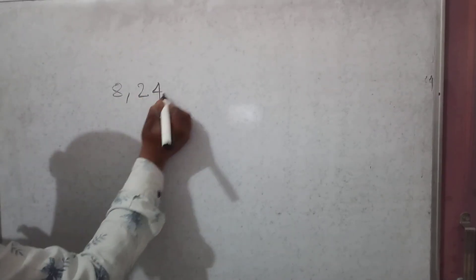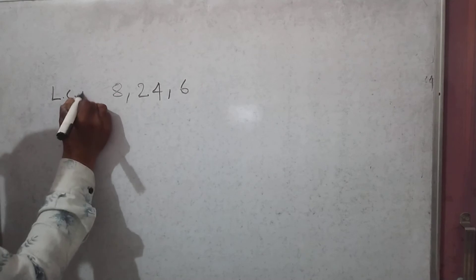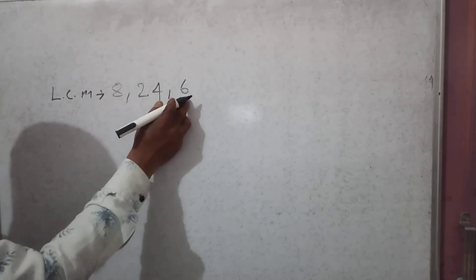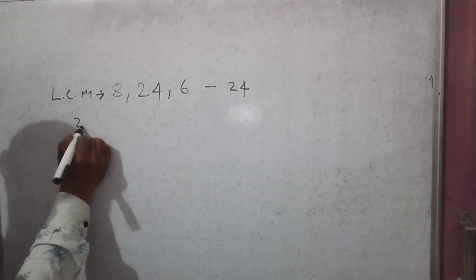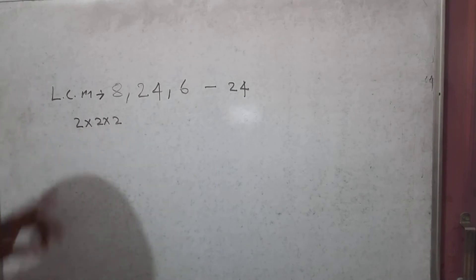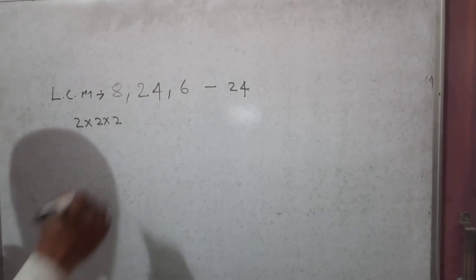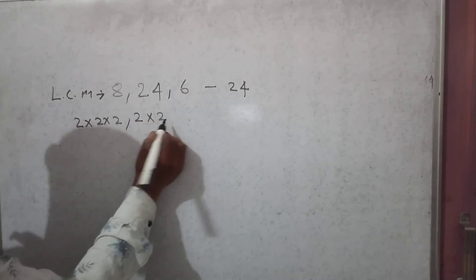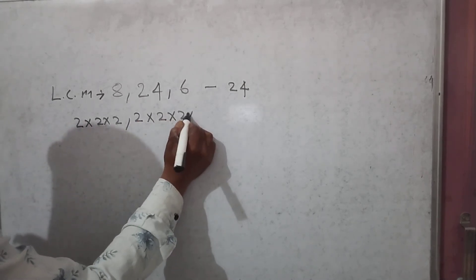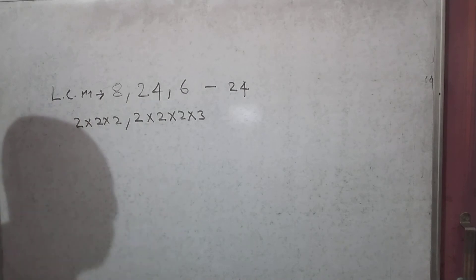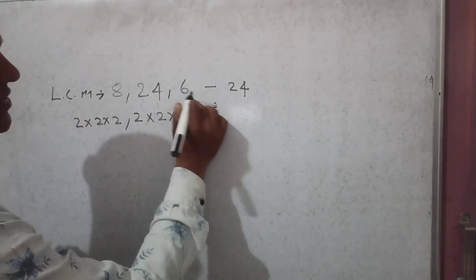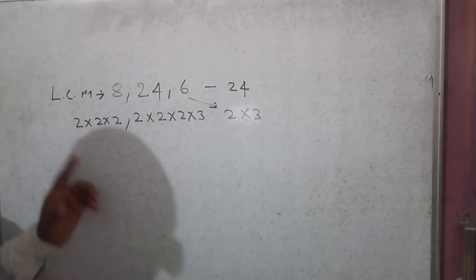What is LCM of 8, 24, and 6? LCM of this number 8, 24, and 6 is only 24. 2 into 2 into 2. Factor of 8 is 2 into 2 into 2. 2 into 2 is 4, 4 into 2 is 8, and 8 into 3 is 24. Factor of 24 is 2 into 2 into 2 into 3. Factor of 6 is 2 into 3.